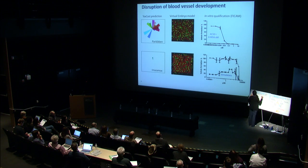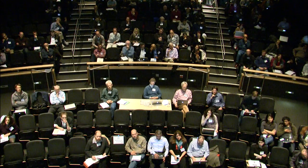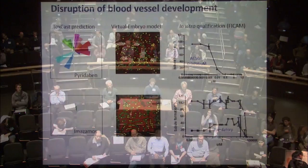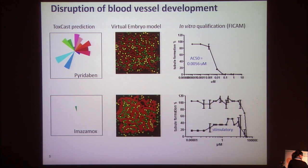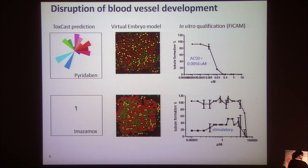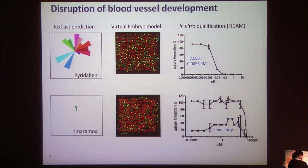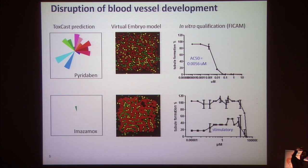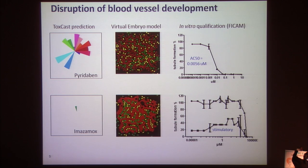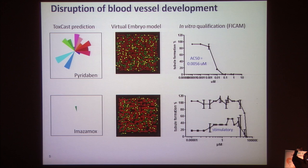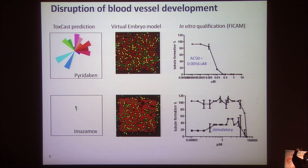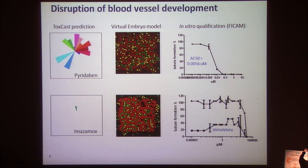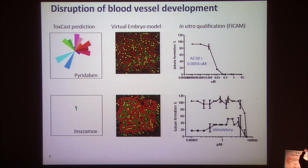In so doing, we can now start to take this cell and molecular data and put them into simulation models. We're using the CompuCell 3D simulation environment that James Glazer's lab developed. Here are just two cases where we can simulate the output of those color wheels — those different predictions — and make a simulated prediction on what the impact might be on blood vessel development, then go into a laboratory and through different types of in vitro platforms, qualify whether or not the prediction holds. In these two cases, the prediction showed that the one predicted to have a strong disruption of blood vessel development turned out to be a very potent inhibitor of blood vessel development acting in a low nanomole range. And imazomox, which was not predicted to have a strong effect, turns out to actually have a mild stimulatory response.